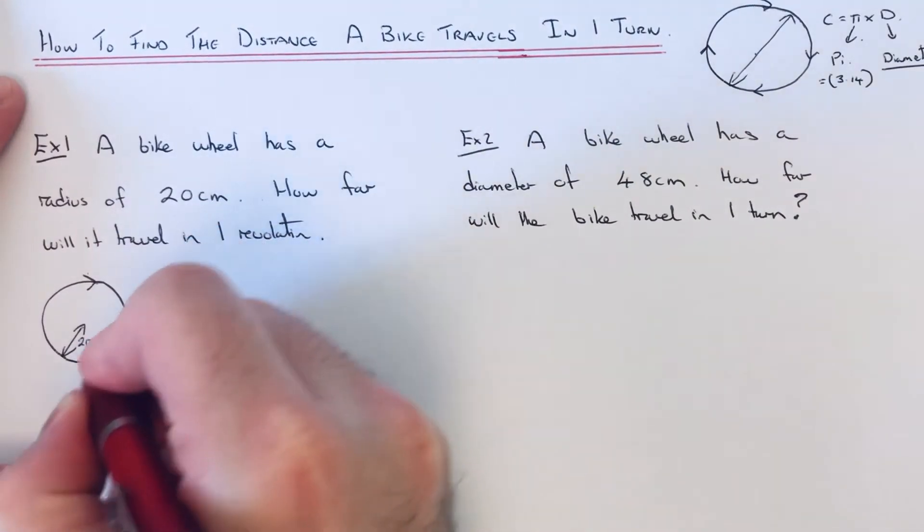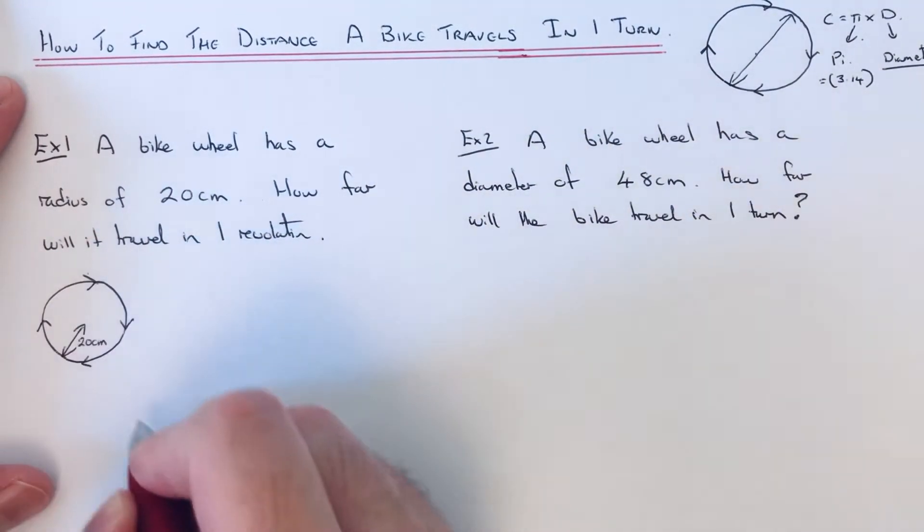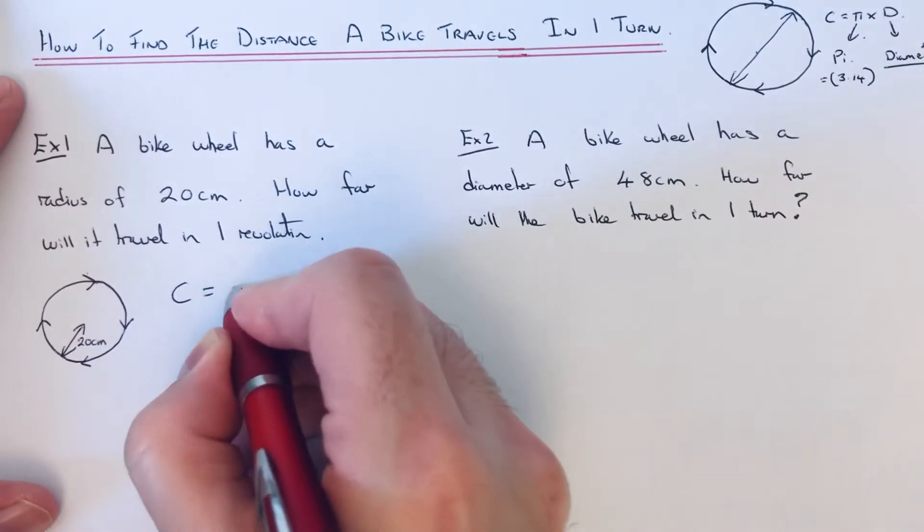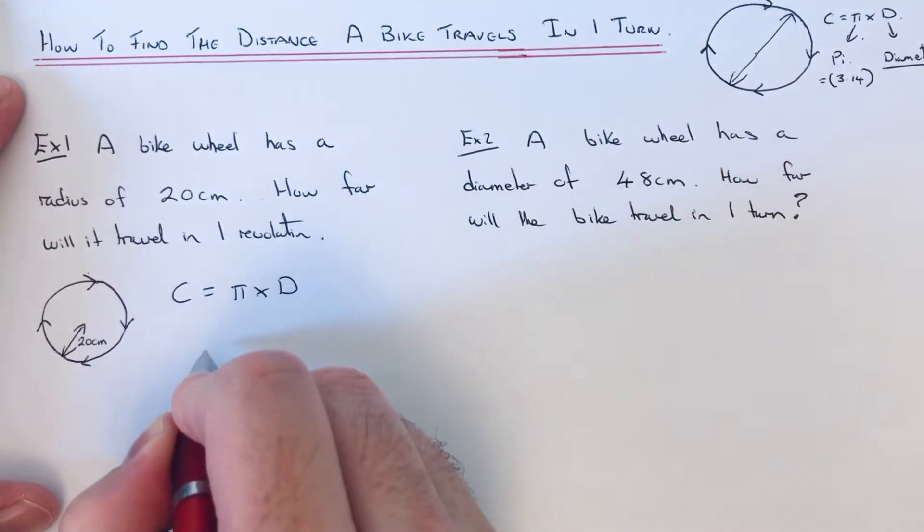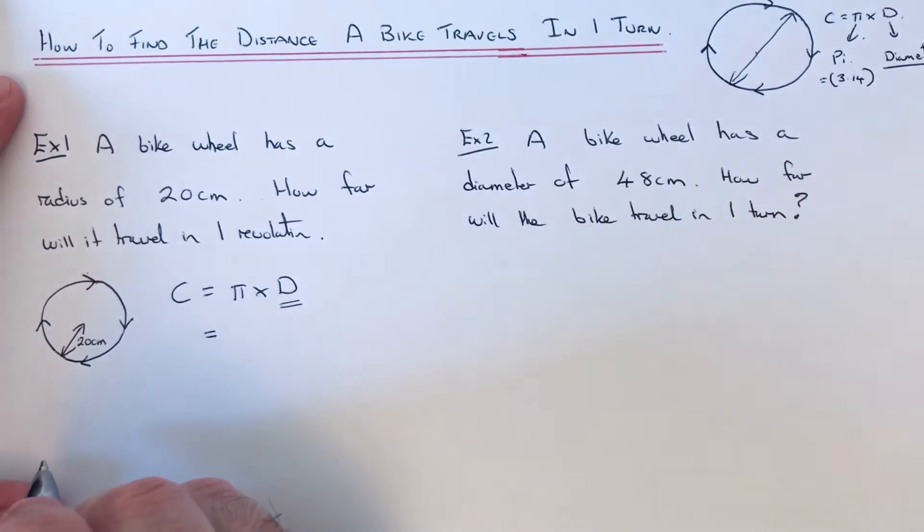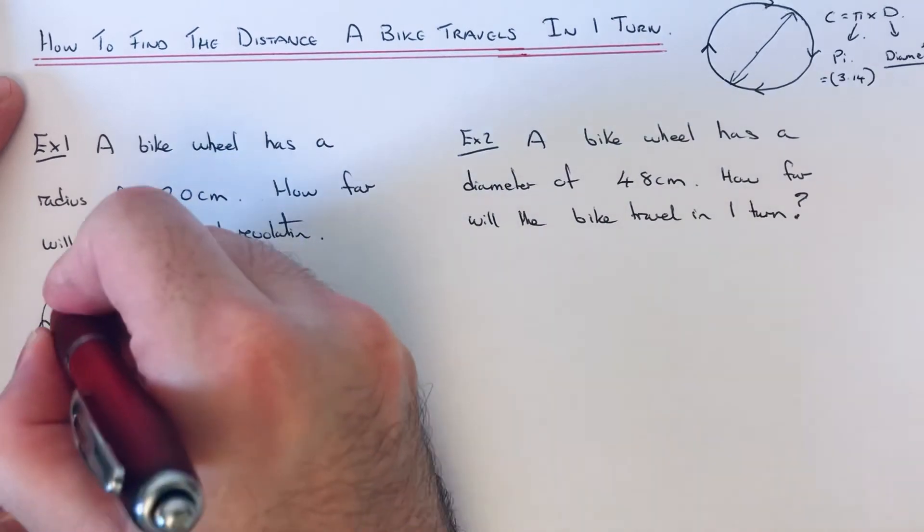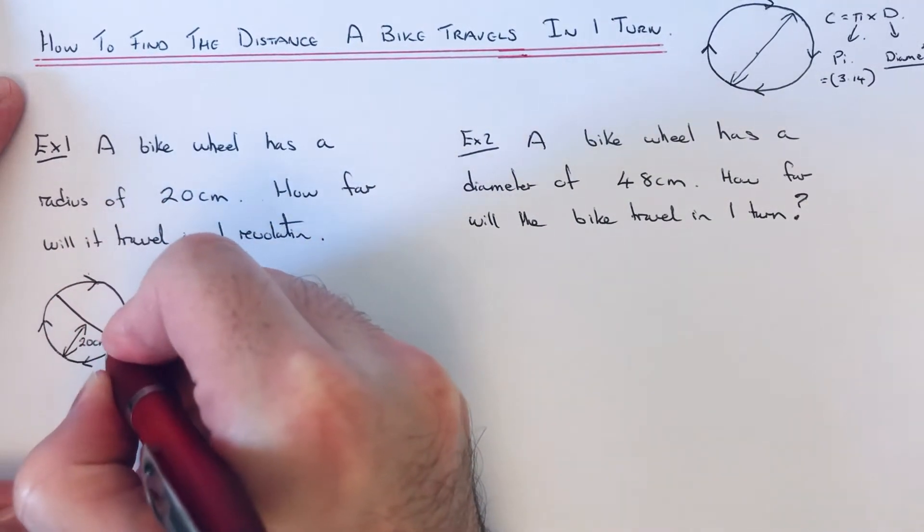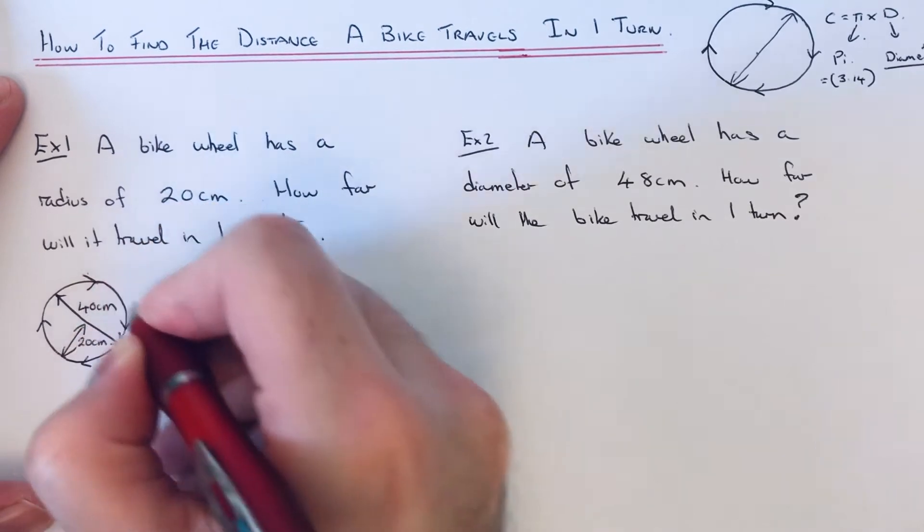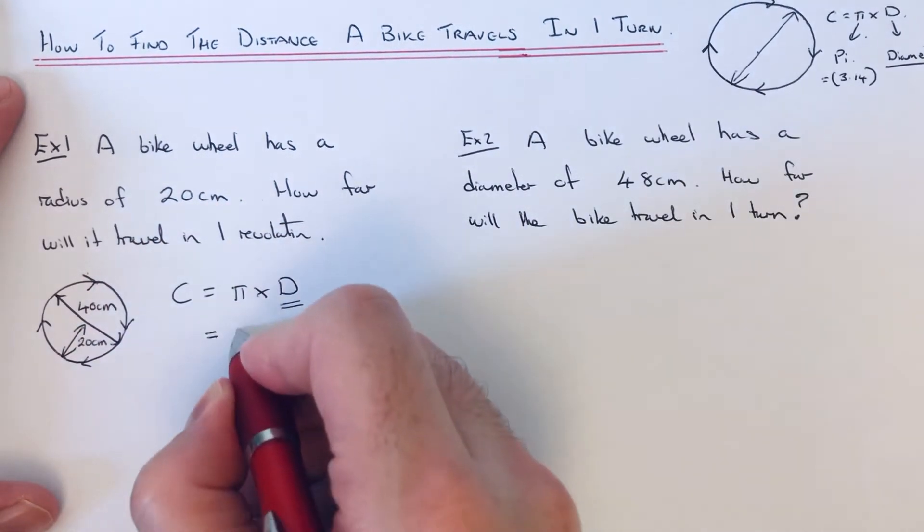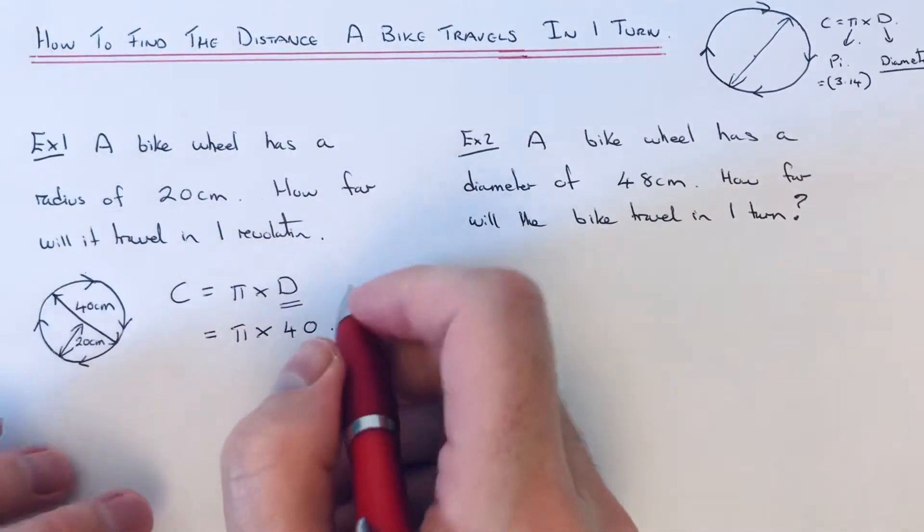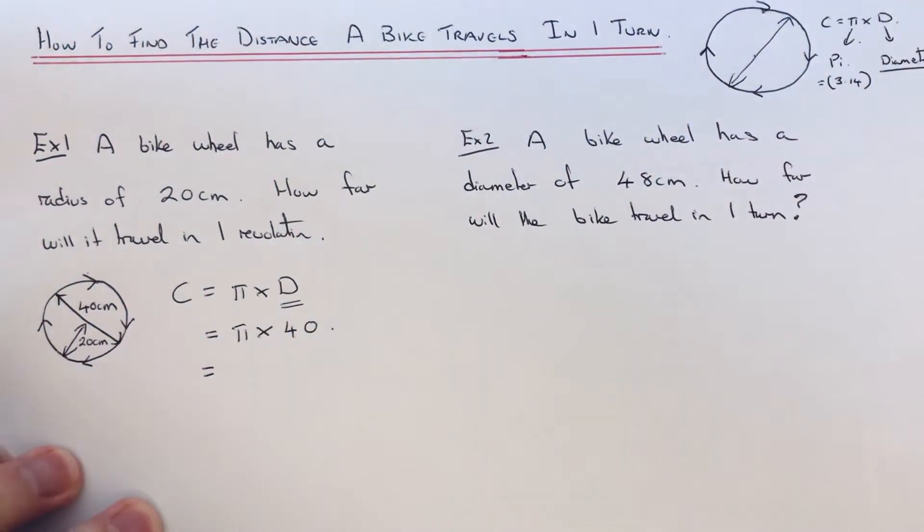travels, we need to work out the circumference. That's the distance around the wheel. Our formula is C equals pi times the diameter. We just need to substitute the diameter into our formula. The diameter would be double the 20 because the diameter is all the way across the center, so we do pi times 40.